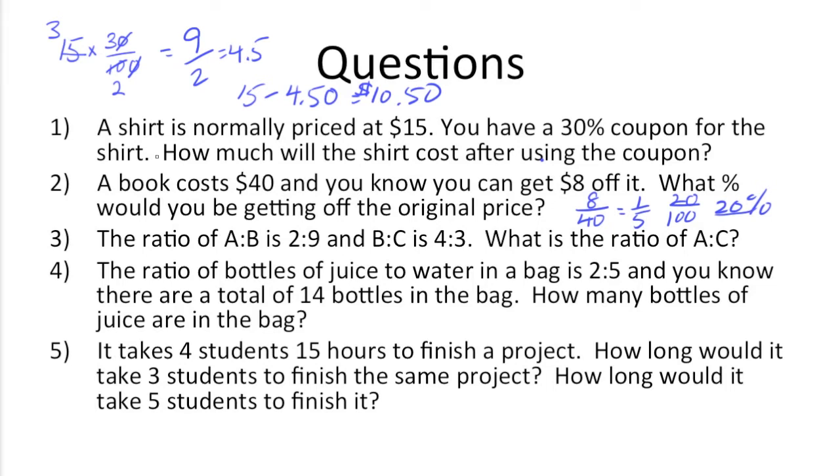Next up, we have the ratio of A to B is 2 to 9, and B to C is 4 to 3. What's the ratio of A to C? So for this question, what we need to do, I'll bring this up here since there's more room, is we know that A to B is 2 to 9, and we know B to C is 4 to 3.